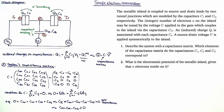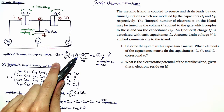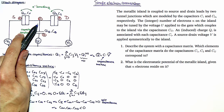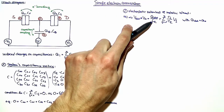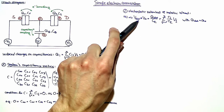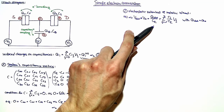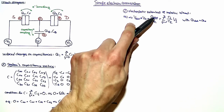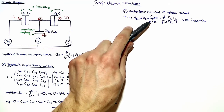In the second part of the exercise, we calculate the electrostatic potential on the island. Using the matrix equation, we solve for v_0 — the potential on the metallic island — obtaining an expression with two terms. Since the charge on the island is quantized in units of the electron charge, we can rewrite this equation accordingly.